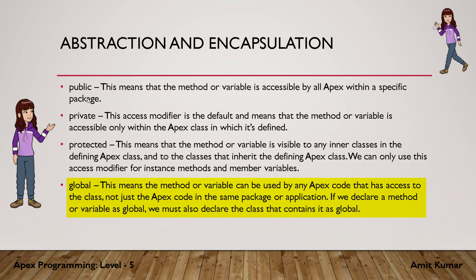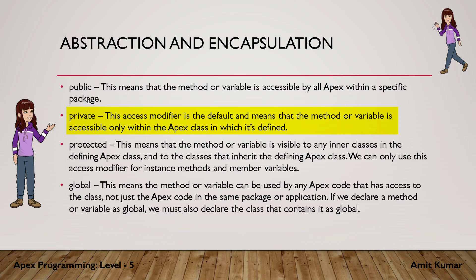So if you want anything to be accessible outside the package, make it global. And make sure if you are making any variable or method as global inside a class, the class must also be declared as global. If we talk about private, it is the most restrictive access, and by default, if you don't provide any access modifier to a member, it will be treated as private.